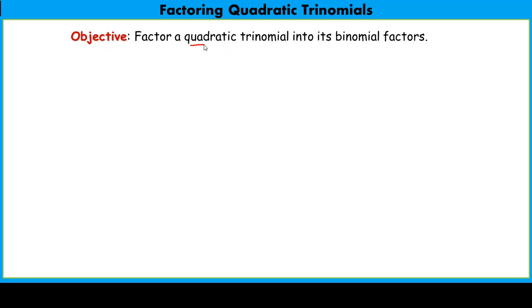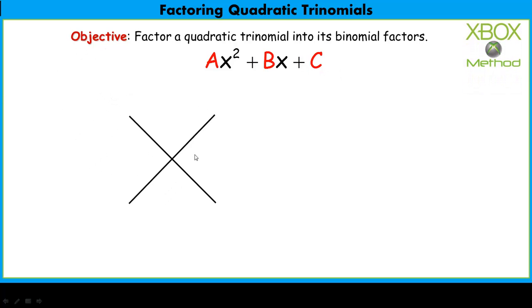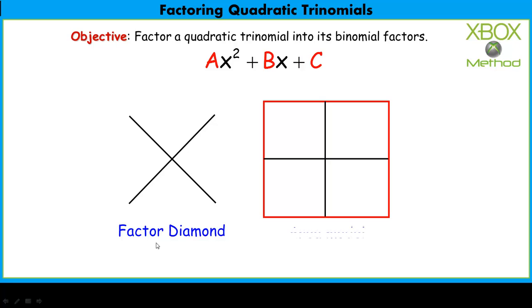When factoring, we're reversing that process — going from the quadratic trinomial back into its binomial factors. In the general form ax² + bx + c, a is the quadratic coefficient, b is the linear coefficient, and c is the constant. The X-box method uses the factor diamond and the area model as tools to convert from a quadratic trinomial into its binomial factors.